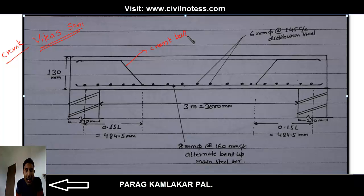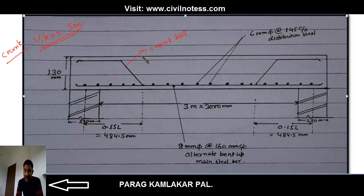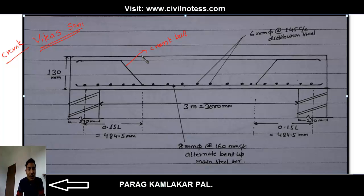Now, why are crank reinforcement bars provided in a beam slab? The reason is that it is actually used for economization of material. If you want to make any section economically, the bent up bar — or crank bar — is provided for that reason. The main reason is economic.